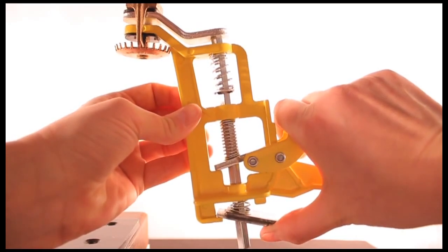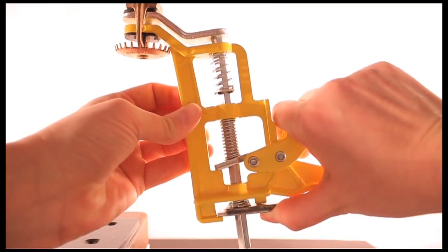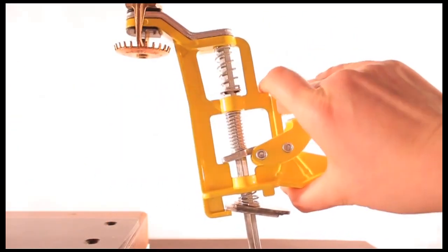Apply force to the fusible link with thumb of trigger hand. Whilst keeping force on the fusible link, slowly free the trigger to release the jaws.